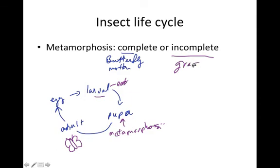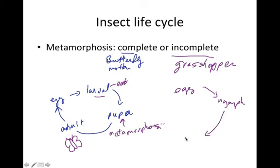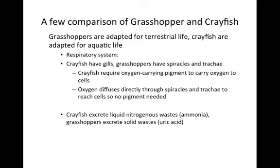Incomplete metamorphosis, seen in grasshoppers and locusts, goes from egg to nymph — which looks like a miniature adult but is not sexually mature. The nymph grows and molts to become a sexually mature adult capable of mating and producing eggs. Those are the two distinct life cycles of insects.